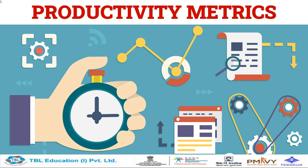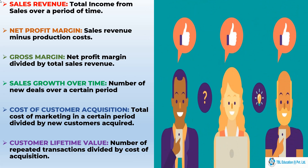I am going to introduce you to 12 of these indicators that you can use to tell how well your product is going to do. Number 1: Sales Revenue. This is the most basic and also the most important — the total income from sales over a period of time. This could be a week, a month, or a year — just the total amount of income that you get from selling your product.